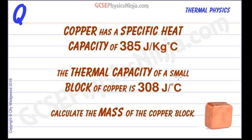The thermal capacity of a small block of copper is 308 joules per degree Celsius and we have to calculate the mass of this copper block.